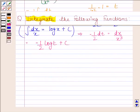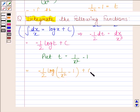Now t is equal to 1 by x square minus 1. So this is equal to minus 1 by 2 log 1 by x square minus 1 plus c.